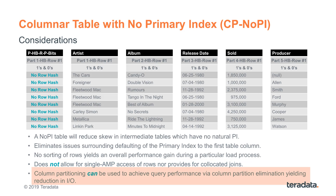However, column partitioning can be used to achieve query performance via column partition elimination. For example, let's say we have a table with 2,000 columns and you're only interested in two of those columns. If this table is row-based you would have to physically read all full rows with all 2,000 columns just to pick out the two columns you're looking for — essentially a full table scan. In a column partition table you would only have to read those two column partitions. The other 1,998 column partitions remain untouched, so the I/O would be just a fraction of the full table scan, resulting in much less I/O and runtime.